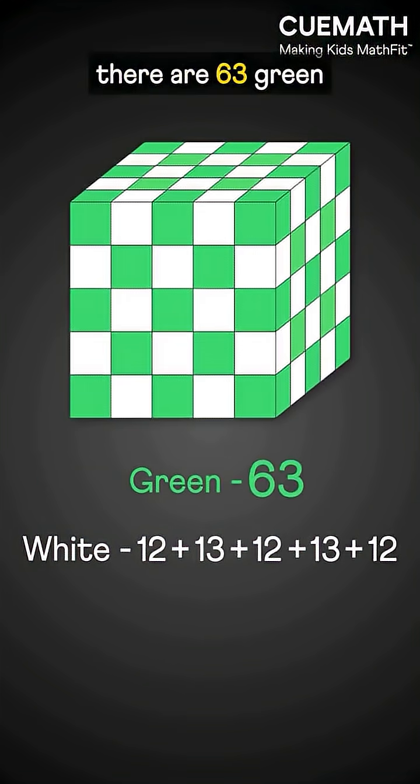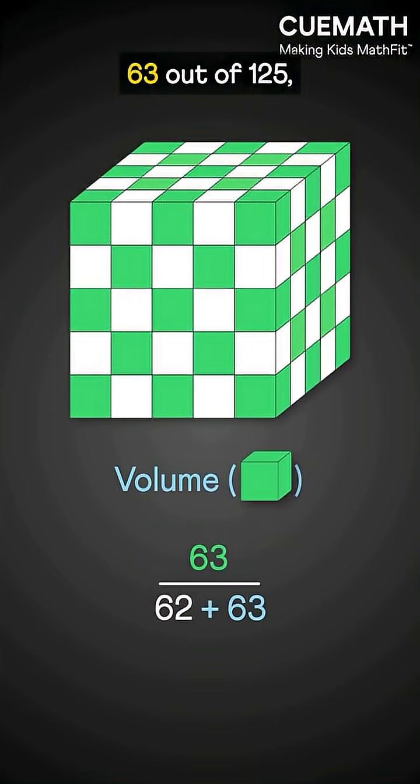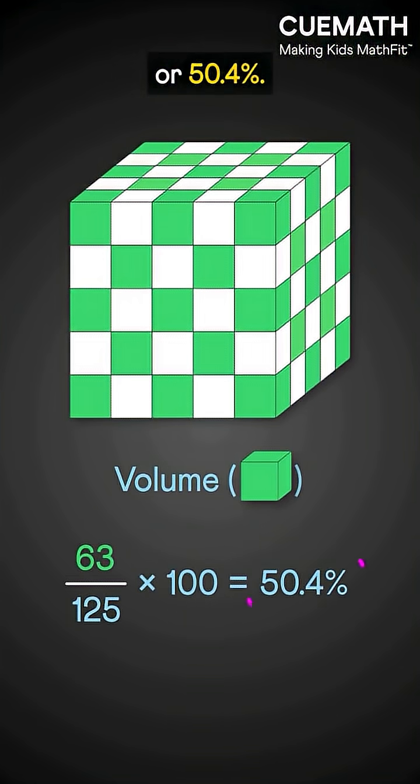In total, there are 63 green and 62 white cubes, making the green volume 63 out of 125, or 50.4%.